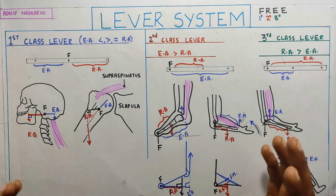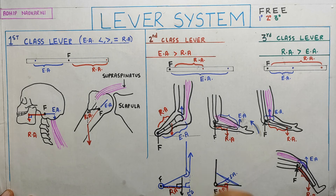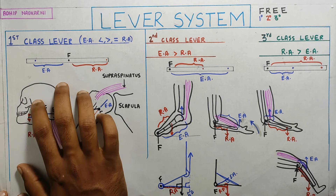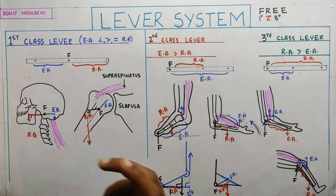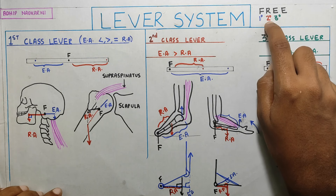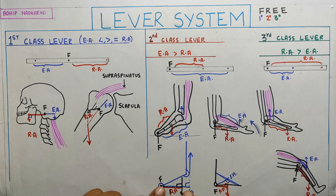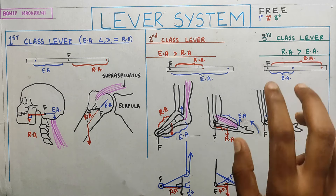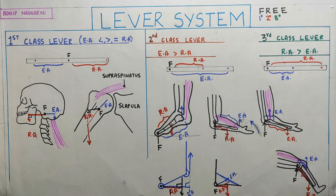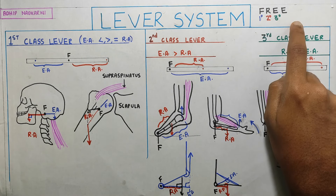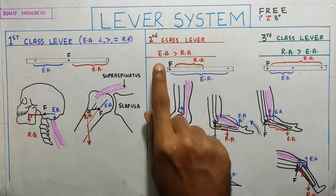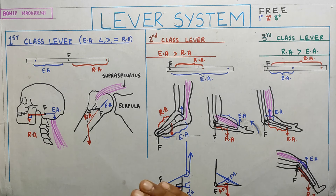If you want me to make another video on this, let me know in the comments below. To summarize: first class lever — fulcrum is in the middle, like a seesaw. Second class — resistance arm is in the middle, resistance is smaller and effort is bigger. Third class — effort arm is in the middle, resistance arm is outside. Remember FREE, understand which one wins, and always take the perpendicular distance as your moment arm — not just where the force acts.